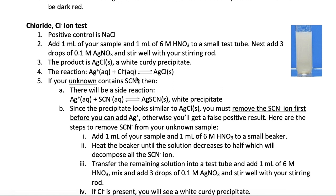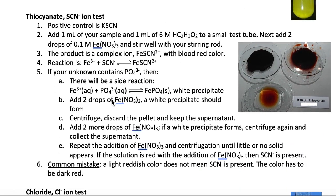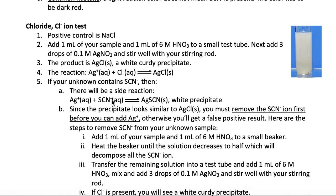Now, if your unknown contains thiocyanate, then this test will actually give you a false positive because silver and thiocyanate itself forms a white precipitate, which is the reaction shown here. So recall that the previous test we did was for thiocyanate. So you would have already known whether your unknown contains thiocyanate or not.